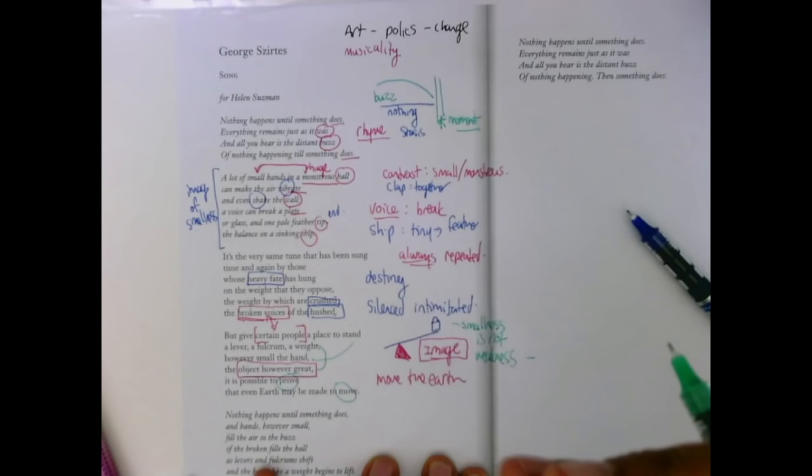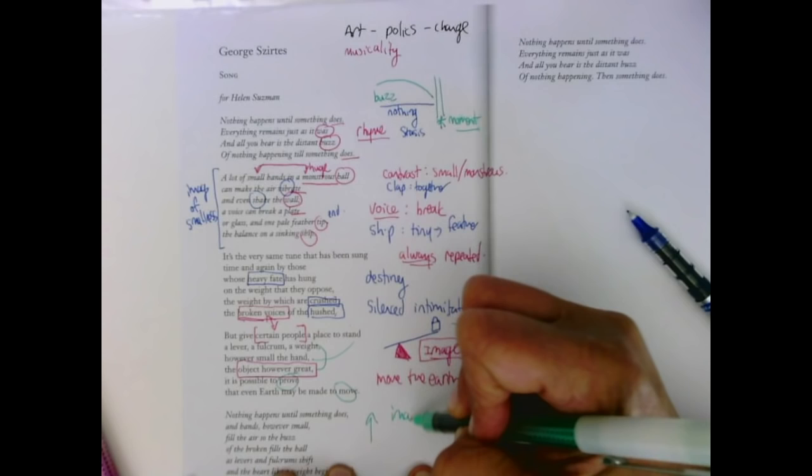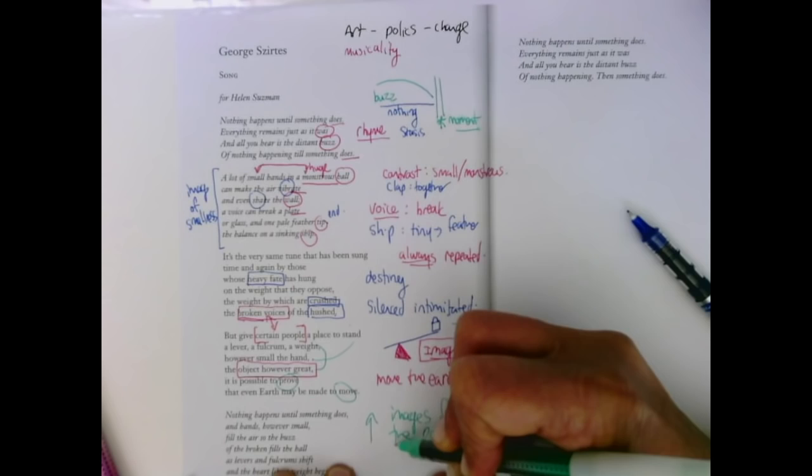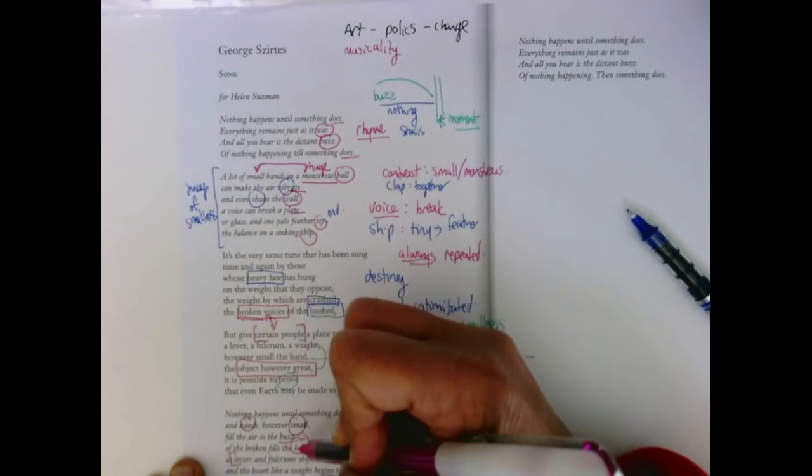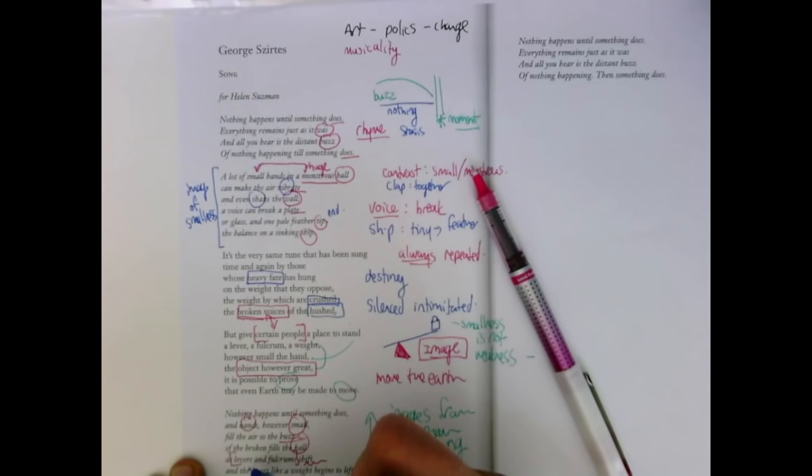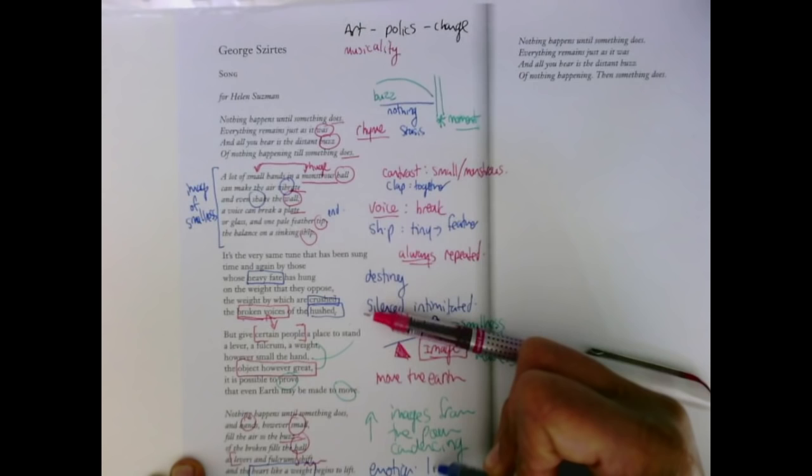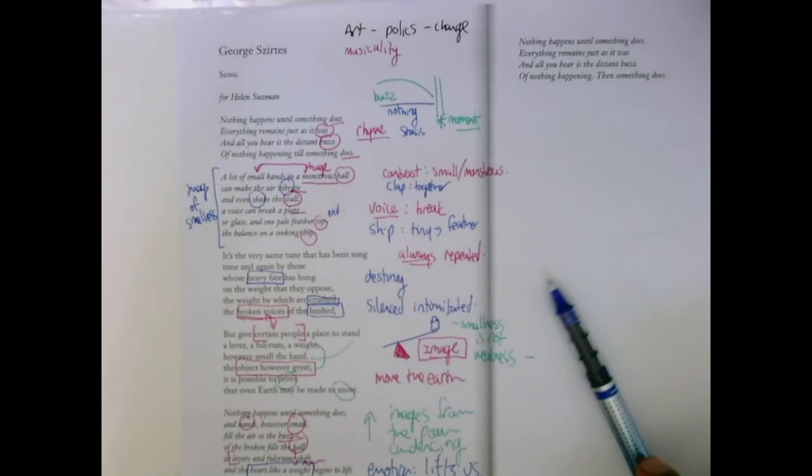We have nothing, and then something. Nothing happens until something does. We go back to the beginning, but now we don't have the full stops. We have a continuation. Nothing happens until something does. And hands, however small, fill the air. So the buzz of the broken fills the hull as levers and fulcrums shift, and the heart, like a weight, begins to lift. So we get the images from the poem kind of condensing here and coming together. Small hands come together. They make a buzz. They fill the hull. These levers and fulcrums are shifting, and the heart is the weight. Emotion lifts us.